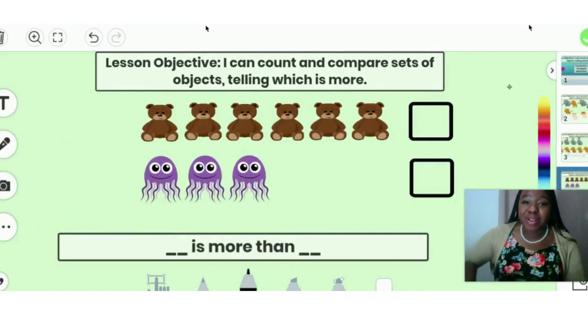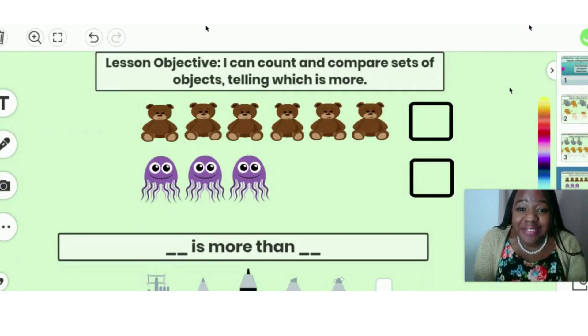And remember, we're learning how to count and compare sets of objects, telling which is more. Let's see. What do we have? We have teddy bears and jellyfish. Okay, count along with me.